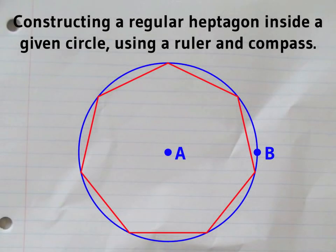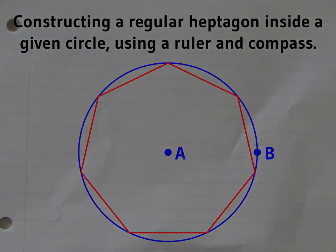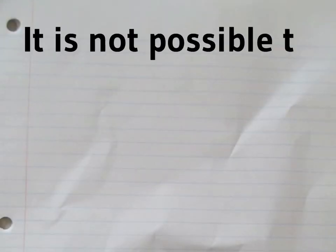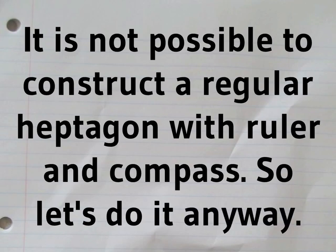Is it possible to construct a regular heptagon using a ruler and a compass? Although we can't do it exactly, this construction shows you how to get so close you won't see the difference.